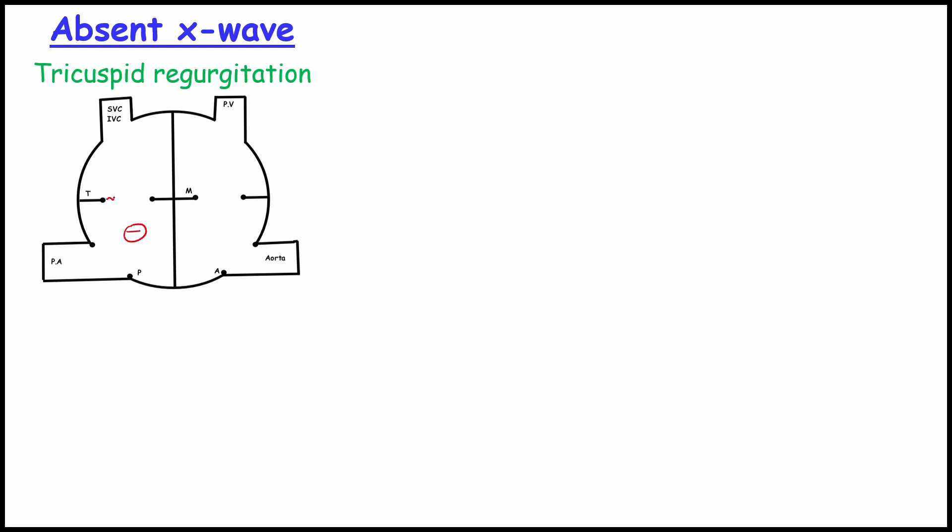Next is absent of X wave. This happens in tricuspid regurgitation. Usually X wave happens due to pressure in the left ventricle decrease. But in this case, there is a backflow of the blood through the incomplete closed valve. This makes the X wave absent. In severe case of tricuspid regurgitation, there will be a positive X wave. In graph, you can see CV wave. Usually it will go downward and steep Y descent. So in tricuspid regurgitation, we can see absent of X wave, CV wave and steep Y descent.